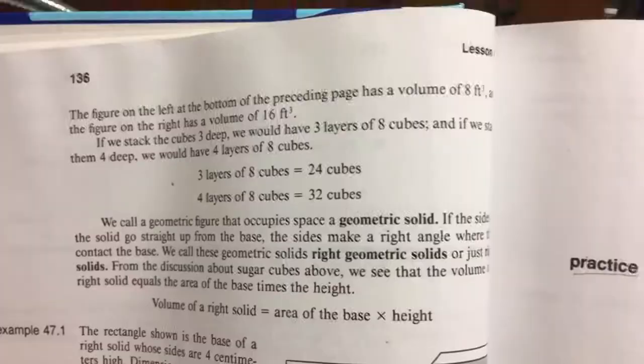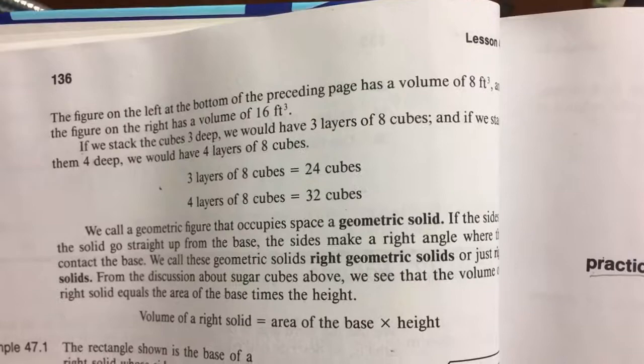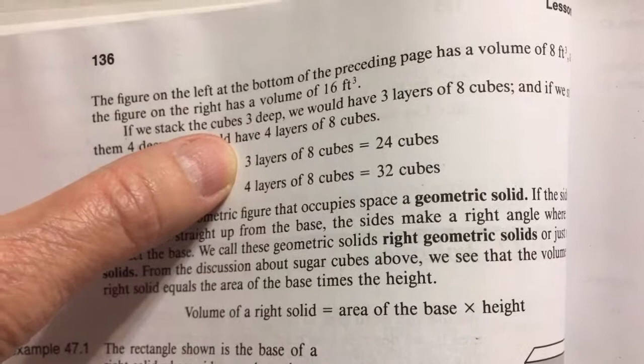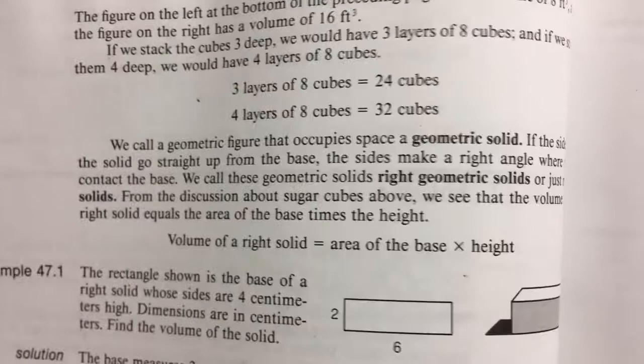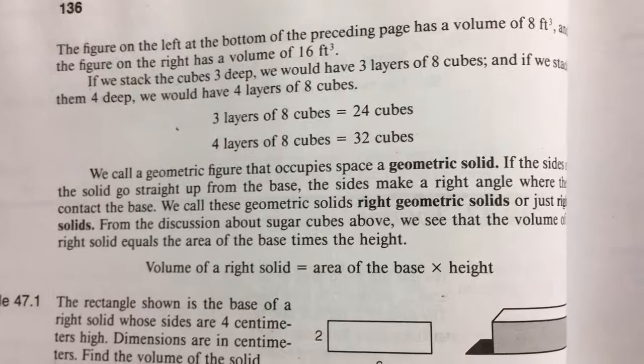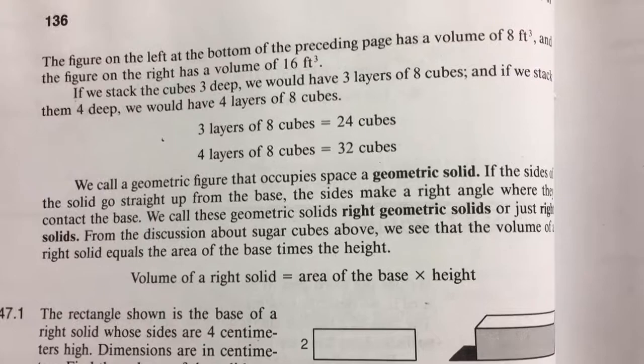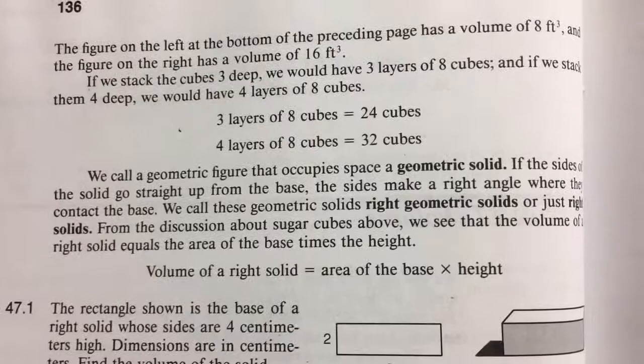On this page they said: if we took that same eight cubes from the last page and had three layers each with eight cubes, we'd have 24 cubes. If we had four layers each with eight cubes, we'd have 32 cubes. A geometric figure that occupies space is called a geometric solid. If the sides of the solid go straight up from the base, the sides make a right angle where they contact the base. We call these geometric solids right solids.